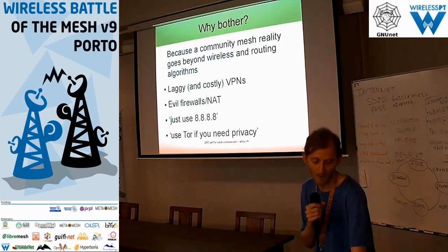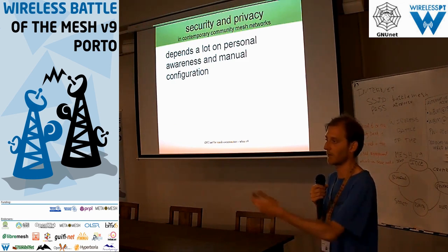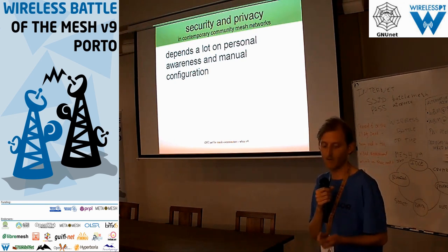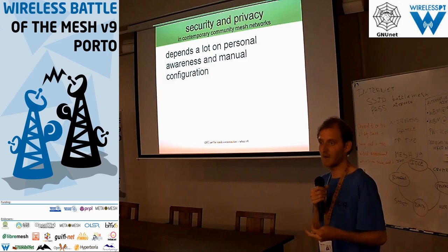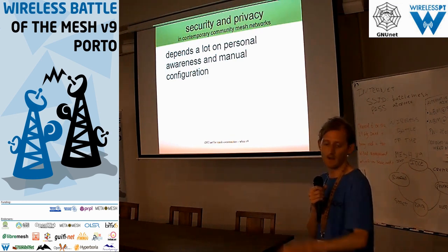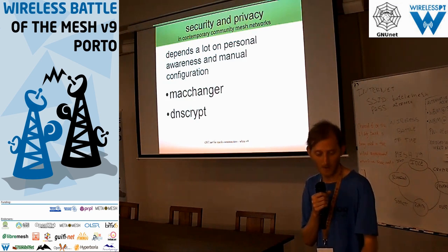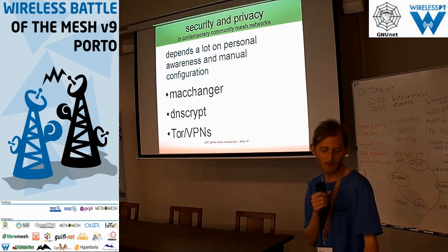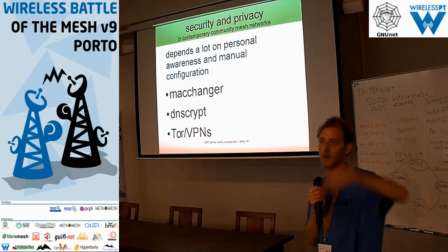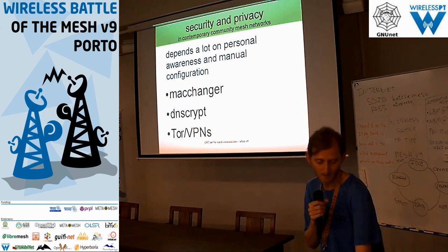To conclude: security and privacy in contemporary community mesh networks depends on a lot of personal awareness and knowledge and manual configuration. You really have to want it and put in a lot of effort to enjoy basic anonymity or location privacy. People can use MAC changer, DNS crypt to encrypt DNS traffic if they have a server hosted somewhere, and commonly use Tor and VPNs — but this depends on the individual user and creates dependencies on external internet services.